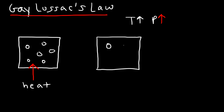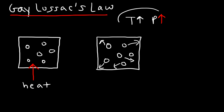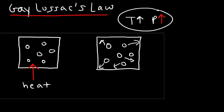As you add heat to the molecules, these molecules will gain kinetic energy and will be moving a lot faster at a higher temperature. As a result of the increased speed, they will collide more frequently with the walls of the container, and anytime you increase the number of collisions you will increase the pressure inside the container. So higher temperature causes molecules to move faster, which increases the number of molecular collisions, which leads to a higher pressure.